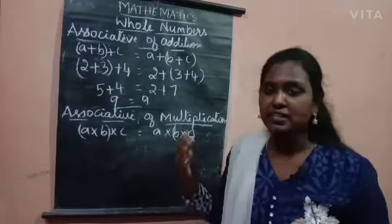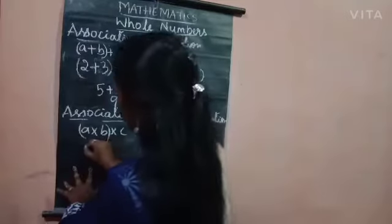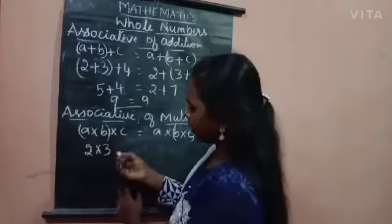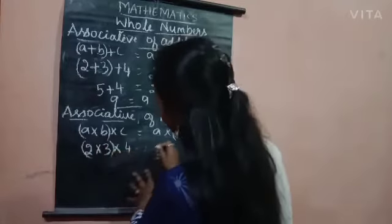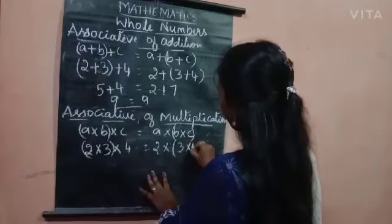Let us apply the same number to avoid the confusion. So 2 into 3, the value of A is 2, B is 3 and C is 4. Again, here also 2 into 3 into 4.